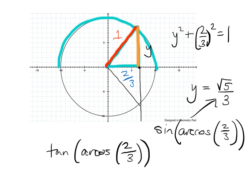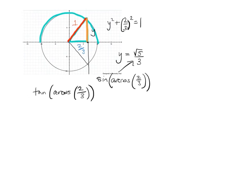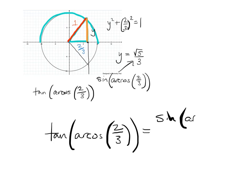as much as it pains me to do so, I will now divide. So tangent of arc cosine of two-thirds is equal to sine of arc cosine of two-thirds over cosine. Over cosine.